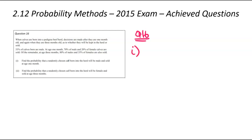The first one is, we're trying to find the probability that there'll be a male and sold at the one month stage. We're trying to find the probability of male and sold at one month.